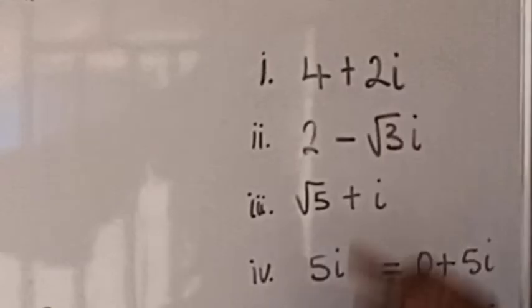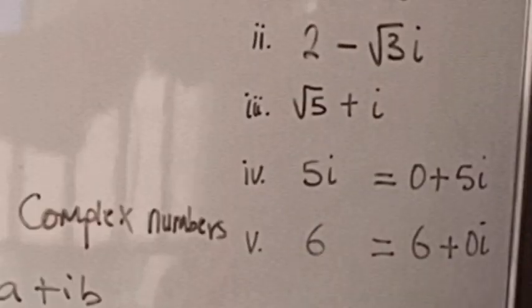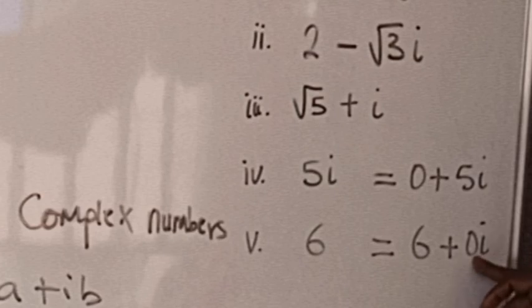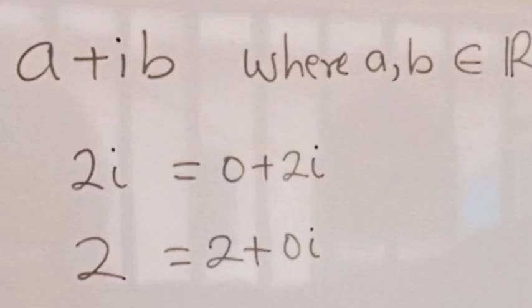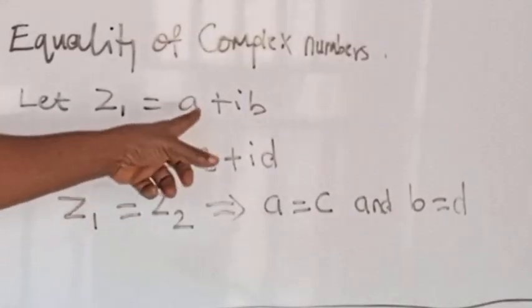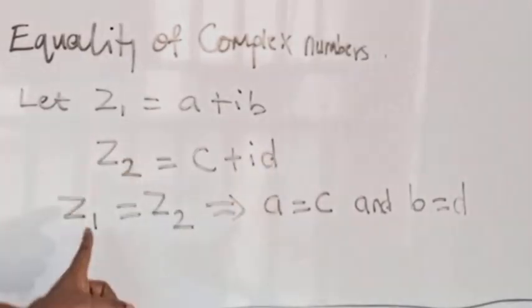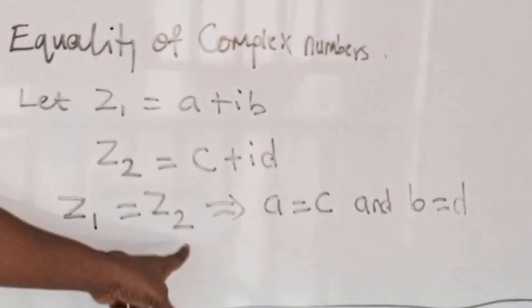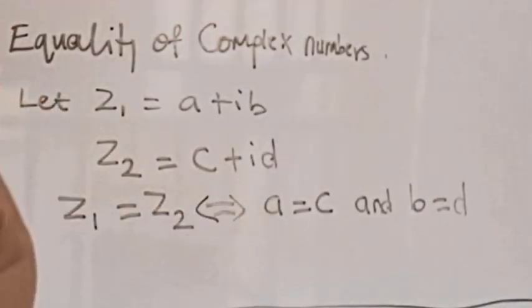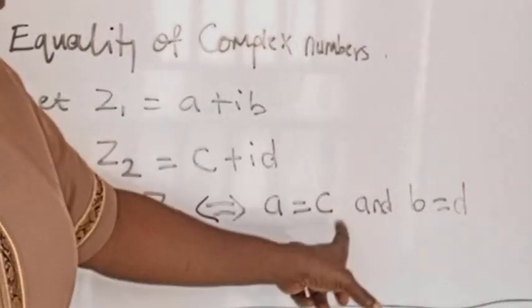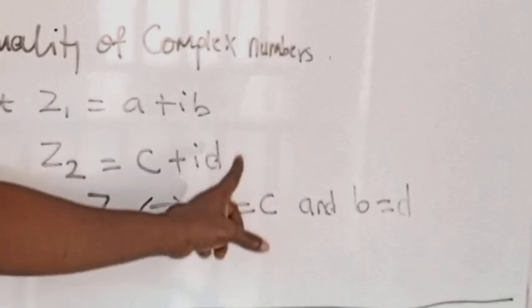Other examples of complex numbers include 4 plus 2i. The number 4 alone is real as well as complex, observing that b equals zero. Regarding equality of complex numbers: if z1 equals a plus ib and z2 equals c plus id, we say that z1 equals z2 if and only if a equals c and b equals d.